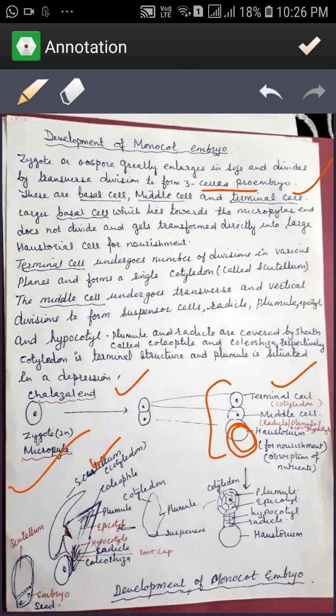There is a terminal cell, the upper one. It undergoes a large number of mitotic divisions to form a single cotyledon that is known as scutellum.